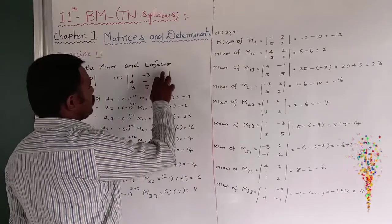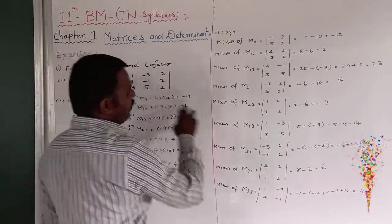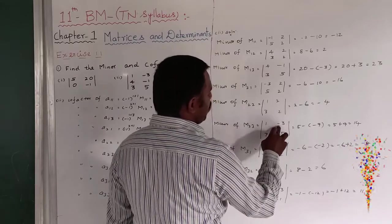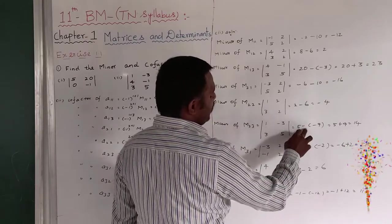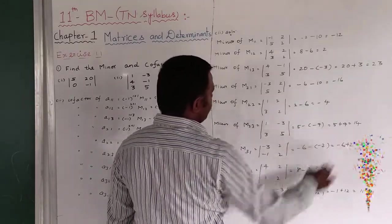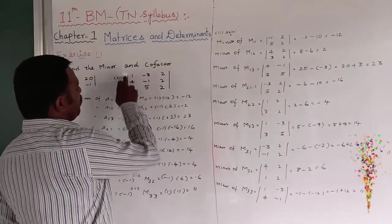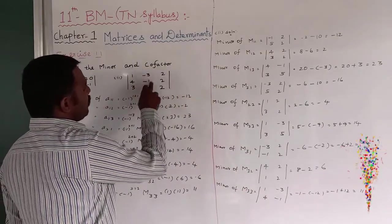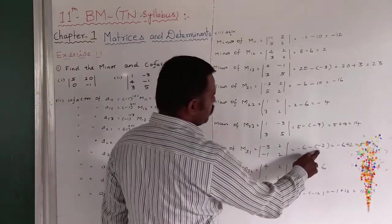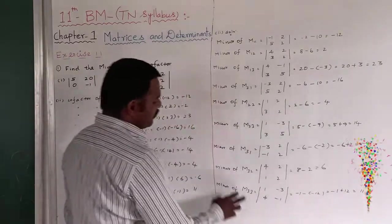Minor of M23, first row third column: 1, minus 3, 3, 5. So 5 plus 9. We already have a minus sign, so 5 plus 9 equals 14. M31 means third row first column: minus 3, 2, minus 1, 2. We get minus 6 minus of minus 2, which is plus 2. So minus 6 plus 2 equals minus 4.